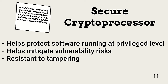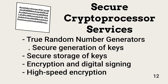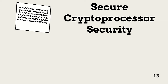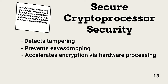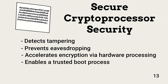Secure cryptoprocessors provide services that help protect software running at the privilege level and help reduce operational risk. Services include secure generation and storage of keys, high-speed encryption, and digital signing. They enable tamper-proof protection of keys and other highly confidential information through tampering detection — secure elements such as keys can be automatically destroyed if tampering is detected. Shield layers prevent electronic eavesdropping on internal signals, and hardware-based encryption is much faster than software-based, relieving the central processor. Cryptoprocessors can also contain information checked during boot-up to help ensure secure system initialization.